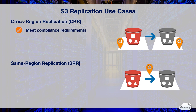You can choose cross-region replication to meet compliance requirements. Although S3 stores data across multiple geographically distant availability zones, some compliance requirements might dictate that you store data at even greater distances. Cross-region replication allows you to replicate data between distant regions to satisfy these requirements. If your customers are in two geographic locations, you can minimize latency in accessing objects by keeping object copies in AWS regions that are geographically closer to your users.